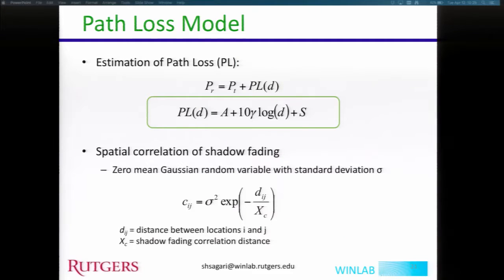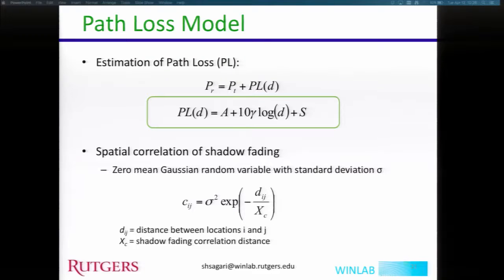We use the well-known path loss model where received power is a function of transmission power plus path loss. Since transmission power is constant, we focus on path loss, defined as: A is the path loss constant, gamma is the path loss exponent, and S is the shadow fading, which is a zero-mean Gaussian random variable with standard deviation sigma. The spatial correlation of shadow fading is defined by a correlation function where dij is the distance between locations i and j, and xc is the shadow fading correlation distance.